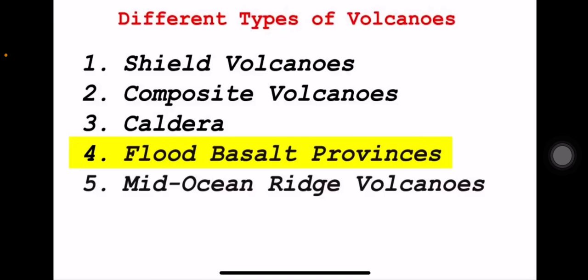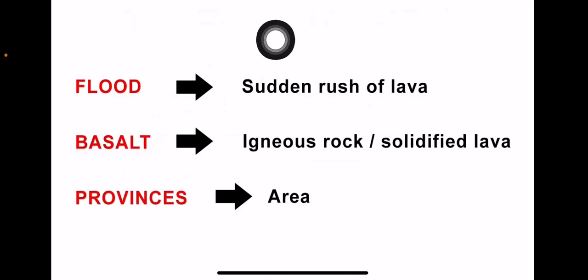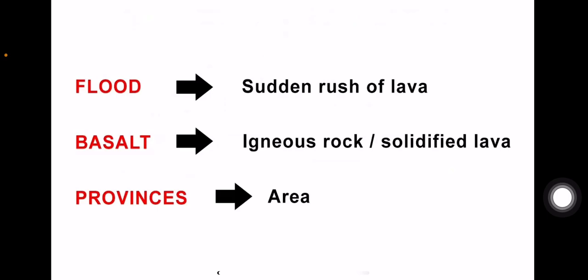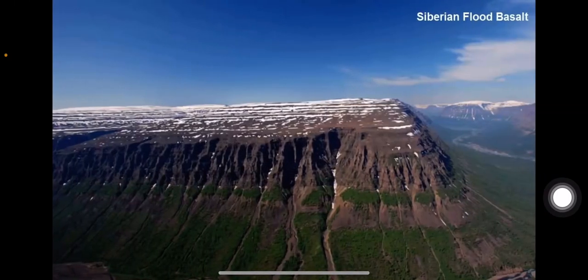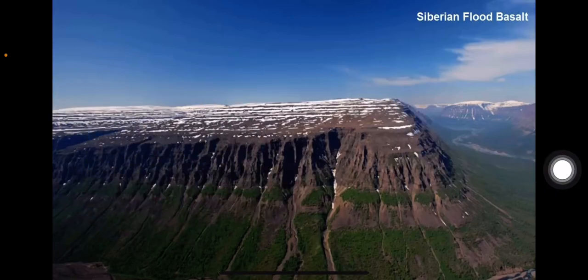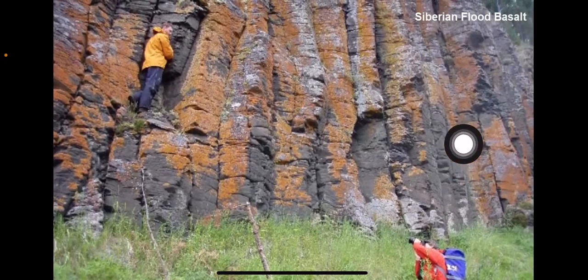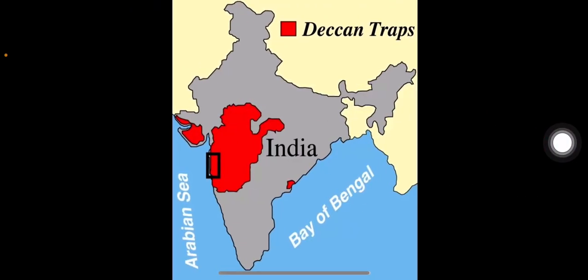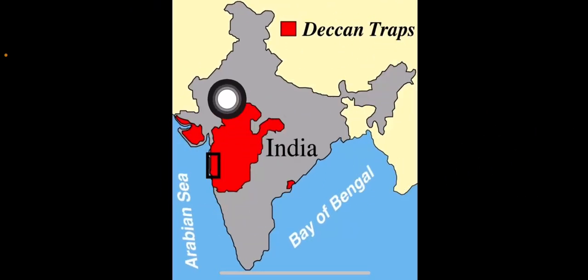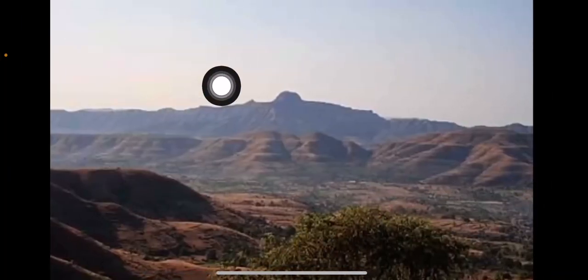Next is flood basalt provinces. Flood refers to a sudden rush of lava. Basalt is an igneous rock — solidified lava is called basalt. A province is a specific area. So flood basalt provinces are regions where a sudden rush of lava solidifies into basalt type rock. Most famous examples are the Siberian flood basalts. In India, you can see the Deccan Traps in the Maharashtra region, which is an example of flood basalt provinces.